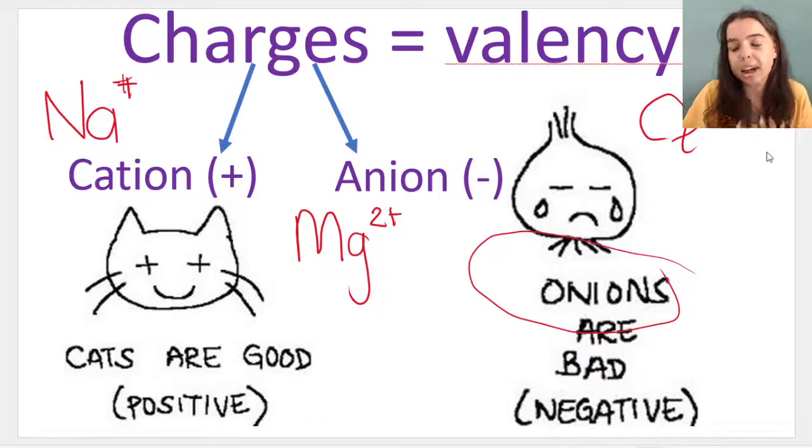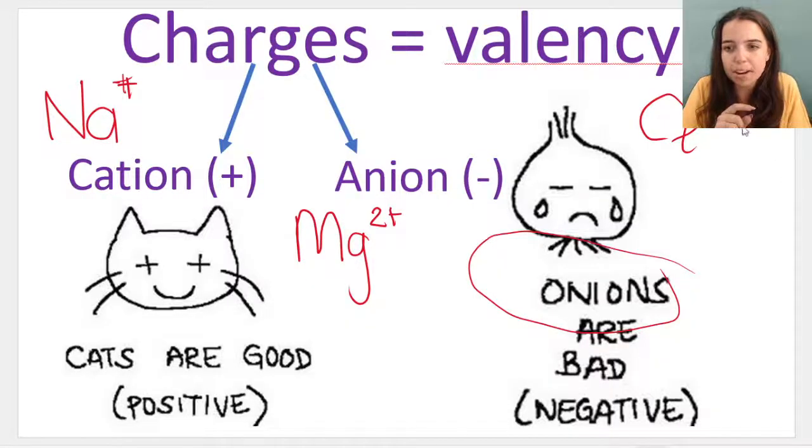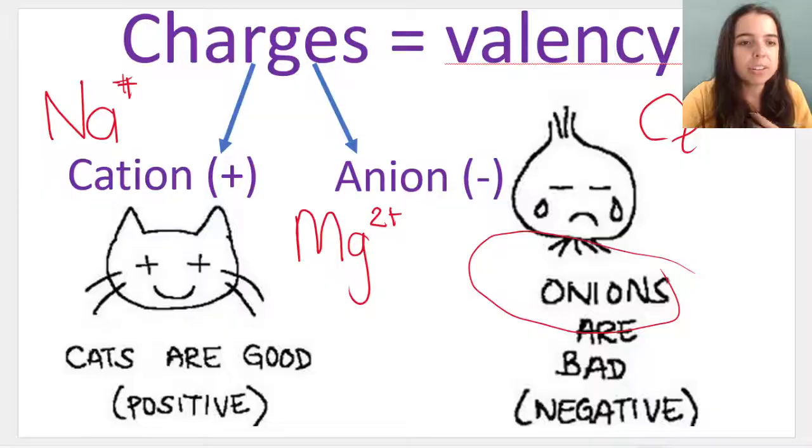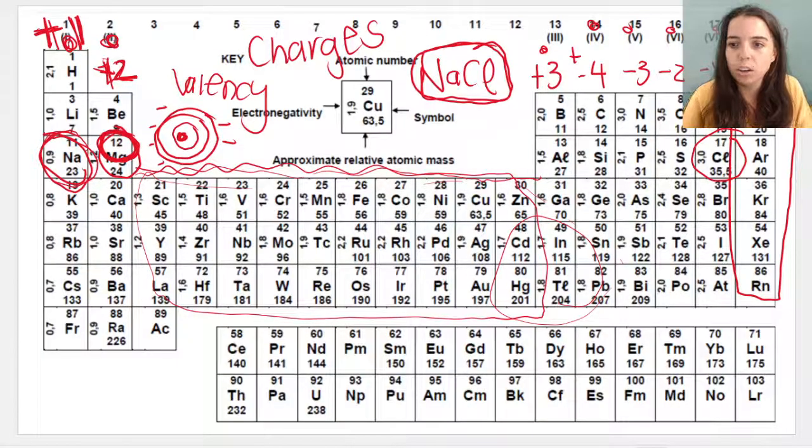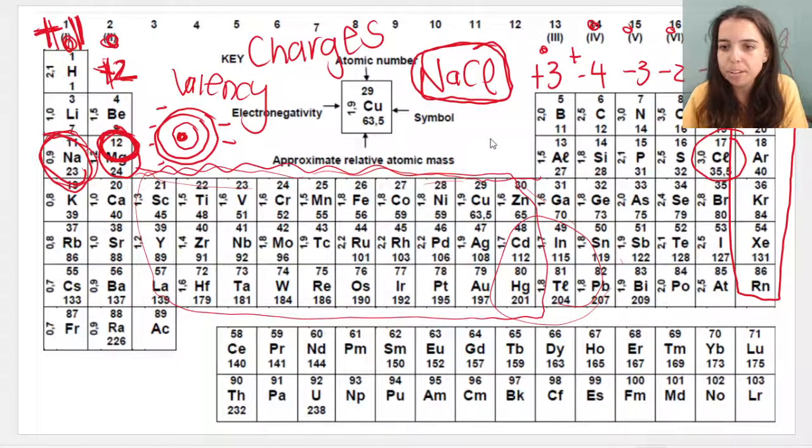So an example of an anion could be Cl minus. That is a chlorine atom that has gained an extra electron. That's why it's got one minus. If we look at the periodic table, this makes sense. Look at chlorine. Look at the group that it's in. There's chlorine. It's got a charge of minus one.